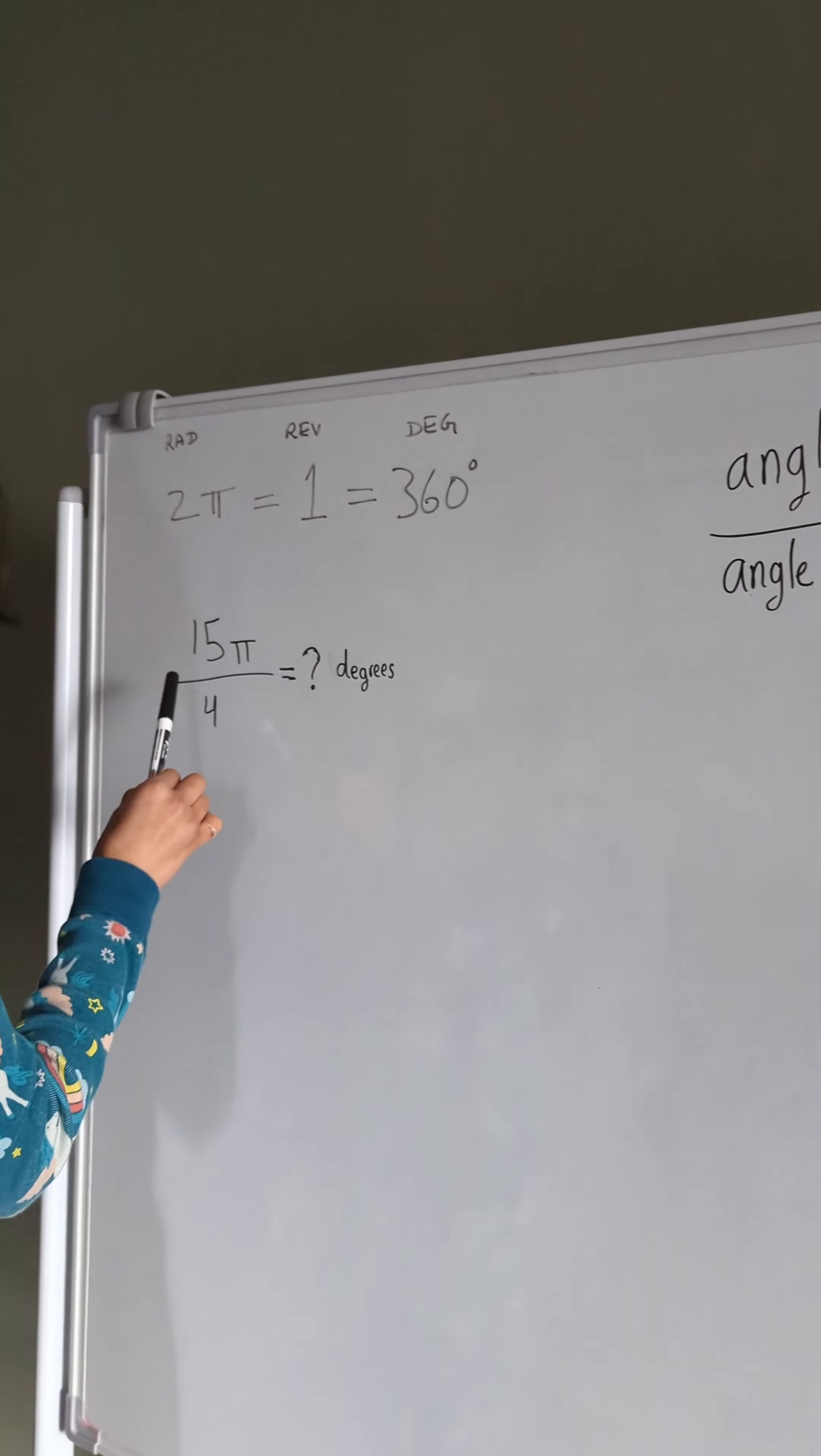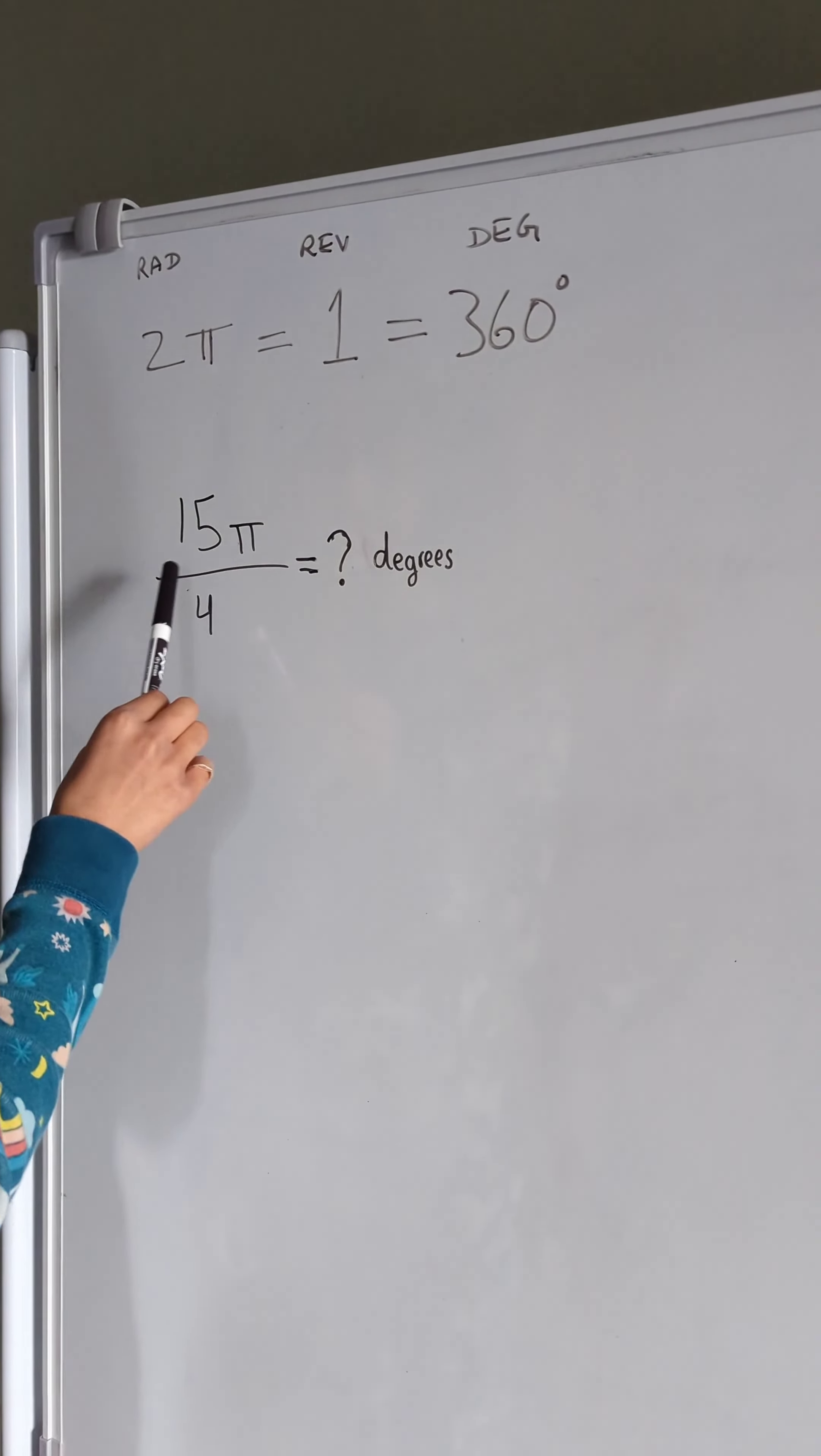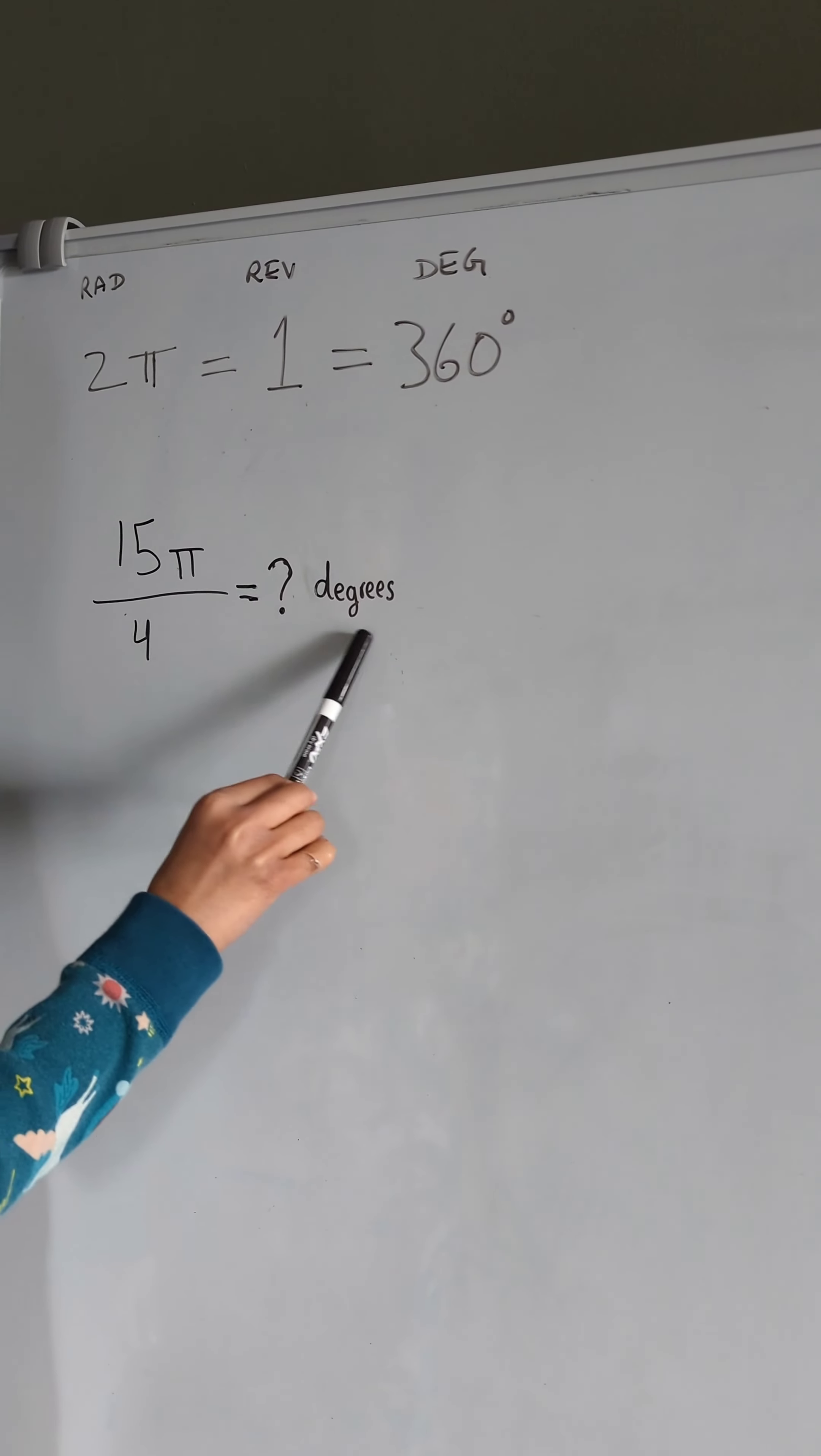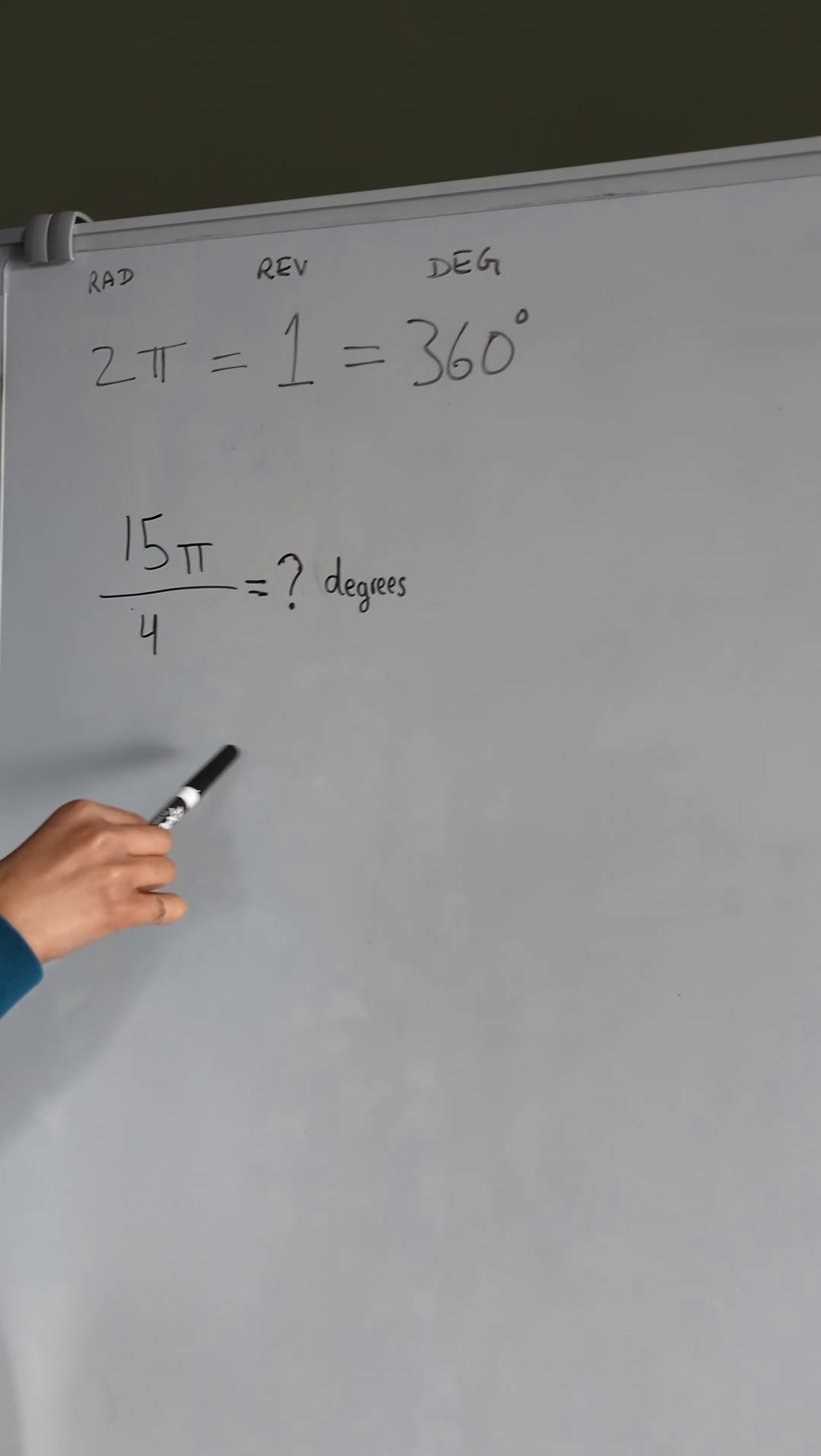If our problem was 15 pi divided by 4 times question mark degrees, that question mark degrees is what we need to find. How many degrees?